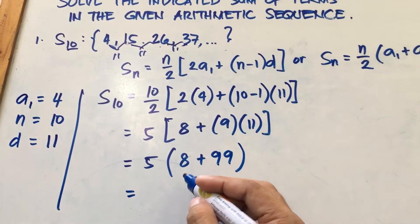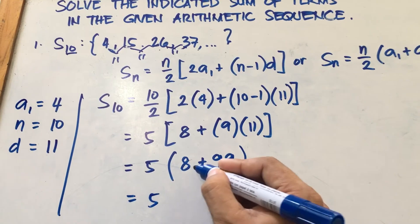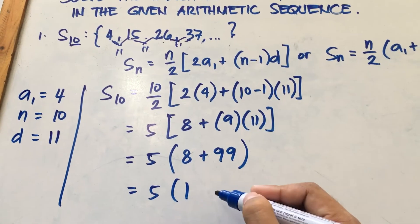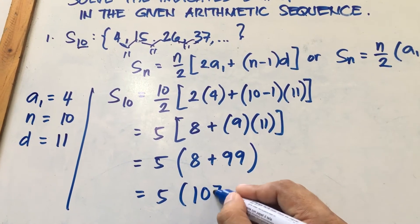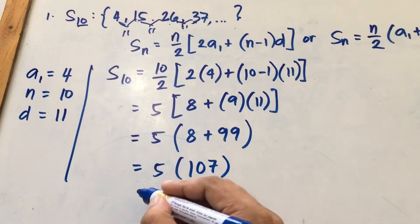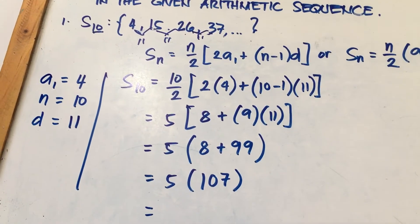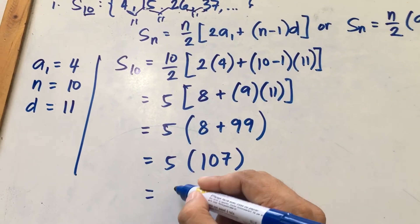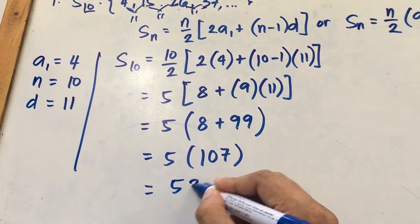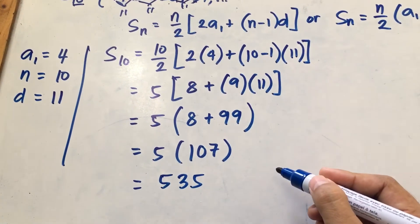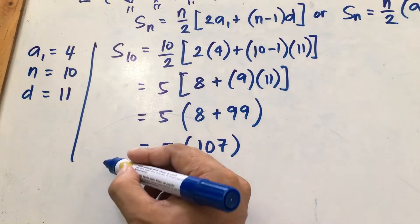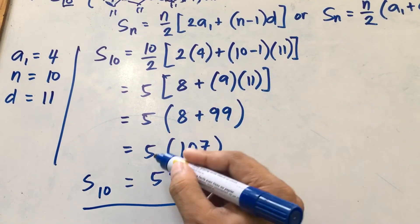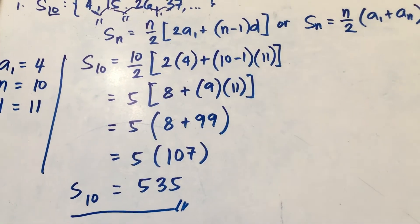9 times 11 equals 99. So we have 5 times the quantity 8 plus 99. 8 plus 99 equals 107. Therefore, 5 times 107 equals 535. So that is the sum of the terms — 535.